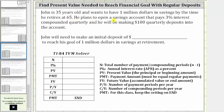John is 35 years old and wants to have $1 million in savings by the time he retires at 65. He has 30 years to save. He plans to open a savings account that pays 3% interest compounded quarterly, making $100 quarterly deposits into the account. John will need to make one initial deposit to reach his goal of $1 million in savings at retirement.